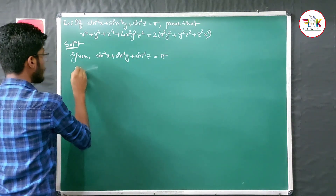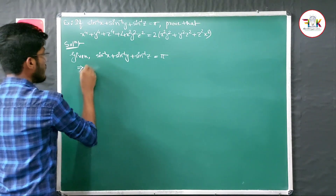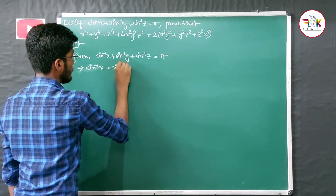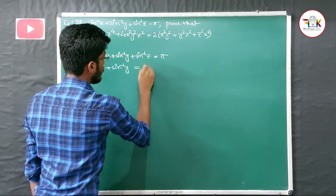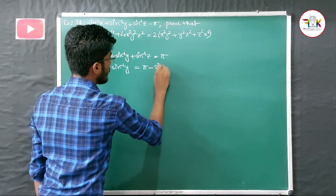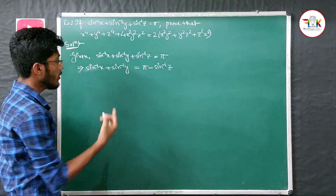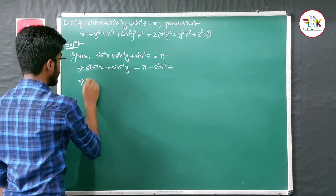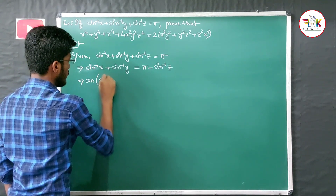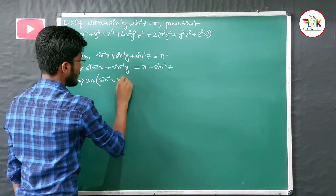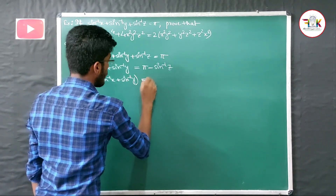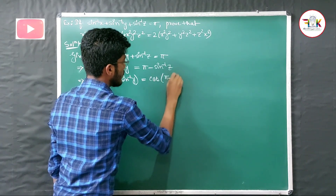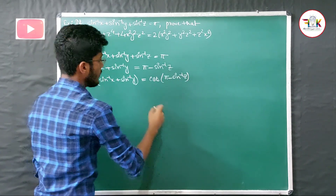We rearrange: sin⁻¹(x) + sin⁻¹(y) = π - sin⁻¹(z). Then we take cosine of both sides: cos(sin⁻¹(x) + sin⁻¹(y)) = cos(π - sin⁻¹(z)).